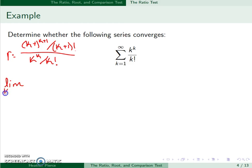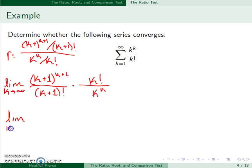So we'll look at the limit as k goes to infinity of k plus 1 to the k plus first power over k plus 1 factorial times k factorial over k to the k.